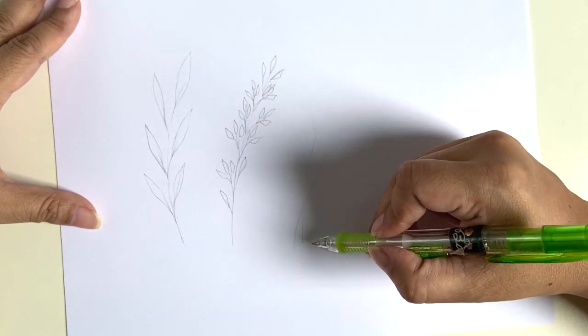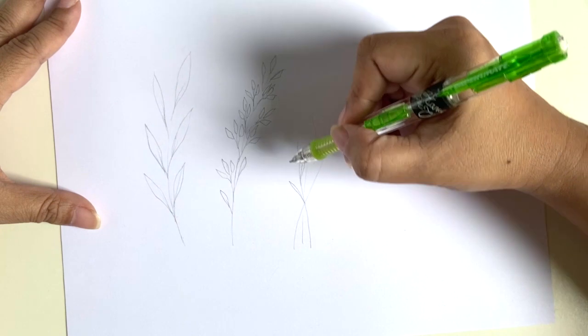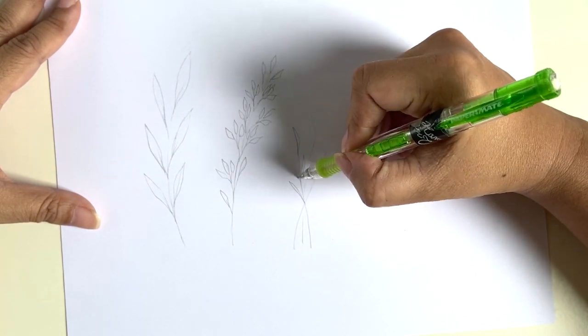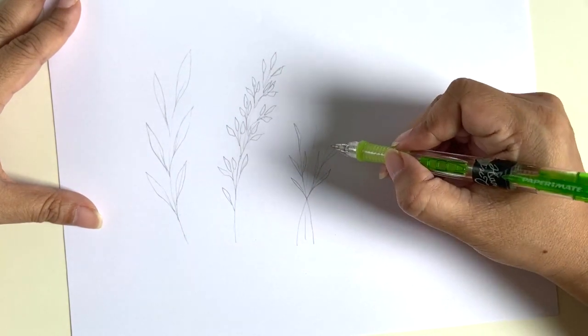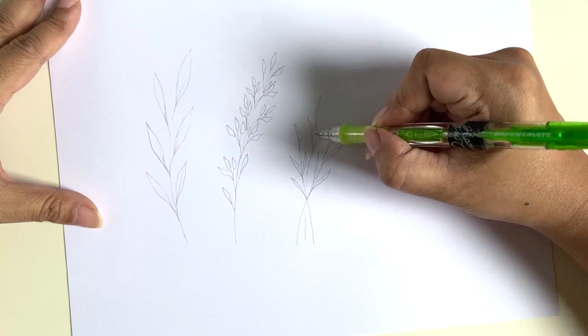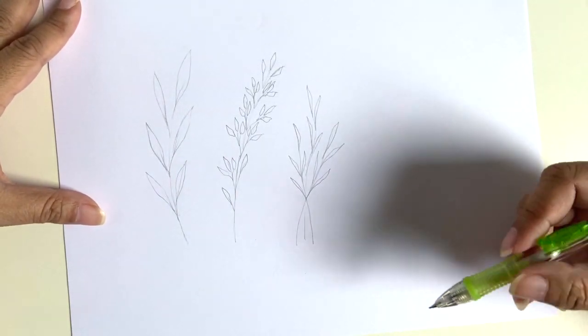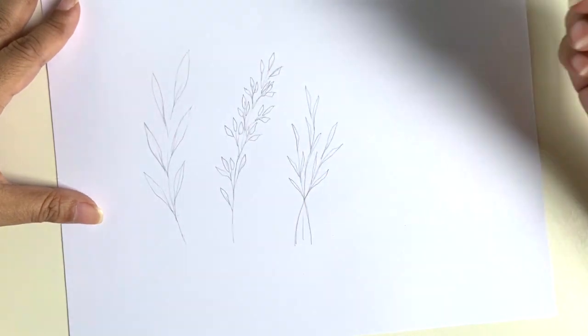The next one's going to have three stems that are clustered together, kind of like a small bouquet. The leaves for this one are going to be longer and more narrow, so I'm going to see how that works together as a composition.